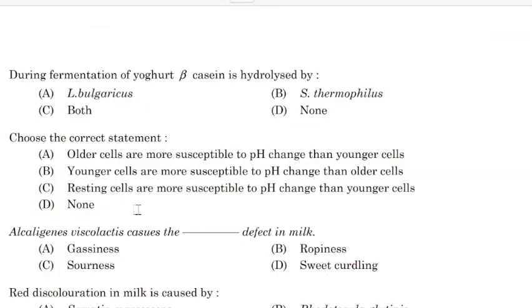During fermentation of yogurt, beta-casein is hydrolyzed by — Correct answer: Option A — Lactobacillus bulgaricus.